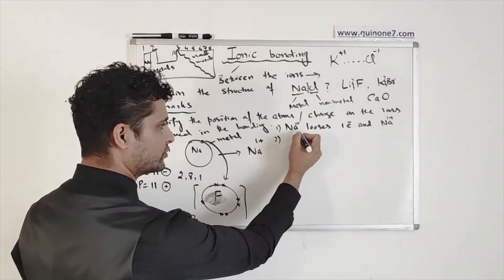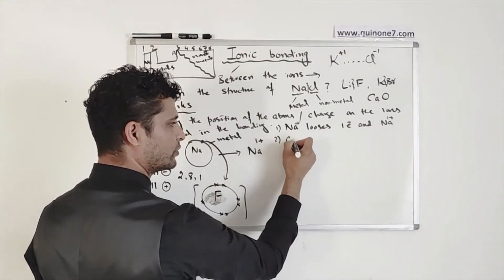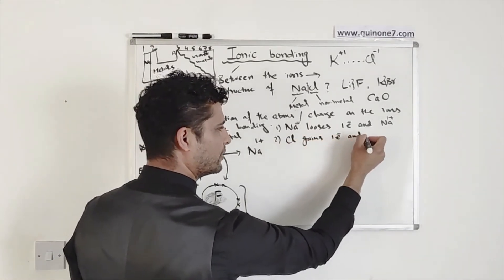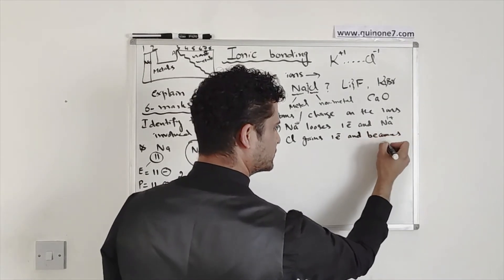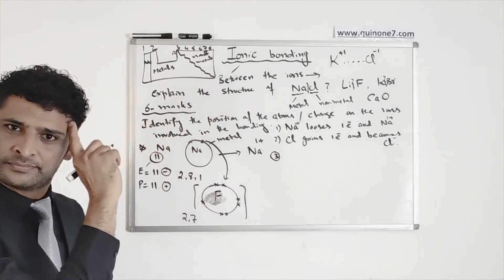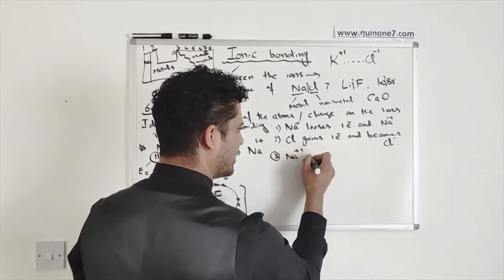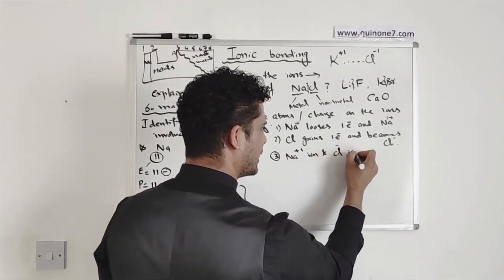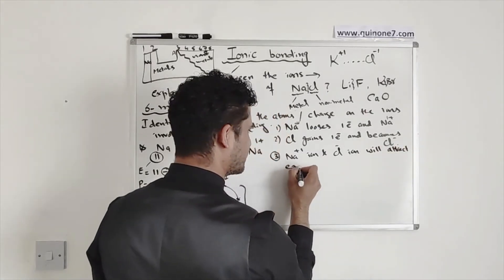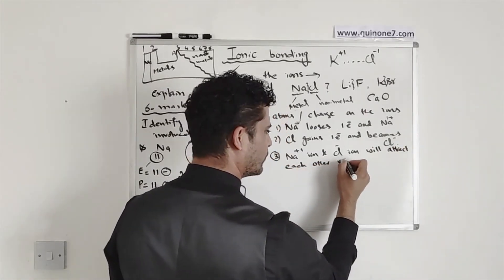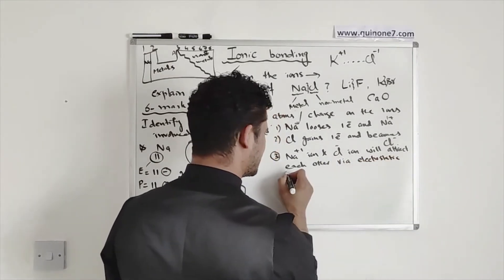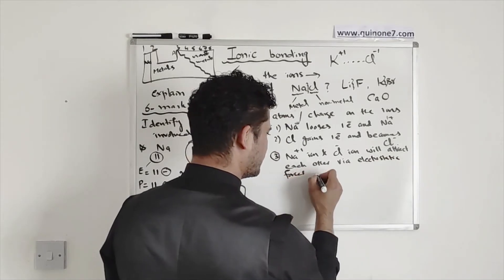So you will say that sodium loses one electron, becomes Na plus 1 ion. Chlorine gains one electron and becomes Cl negative ion. The third mark, Na positive ion and chloride ion will attract each other via electrostatic forces of attraction.